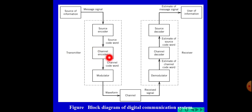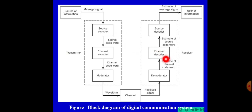On the receiver side, the channel decoder is used. The channel decoder performs the reverse process of the channel encoder. It transforms the received sequence into the binary sequence.